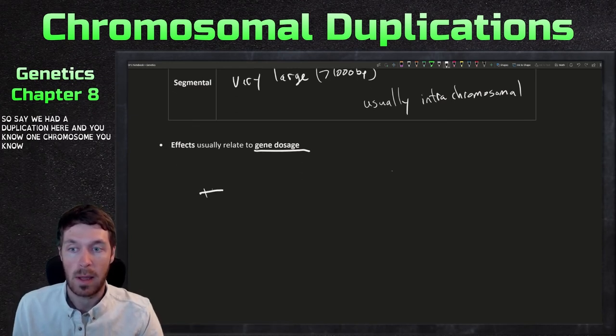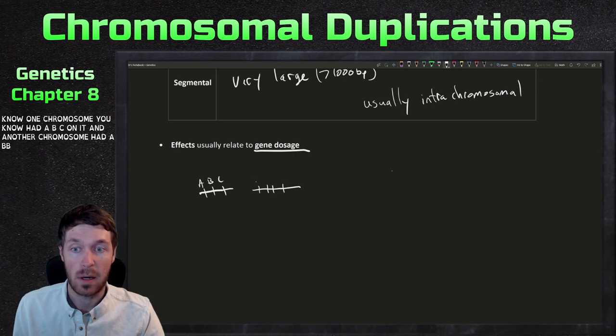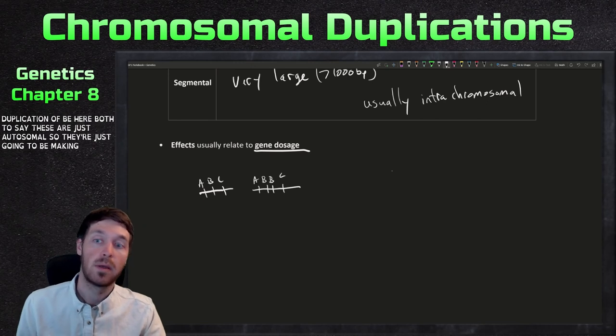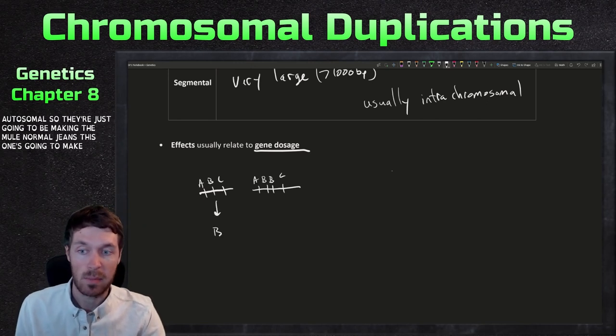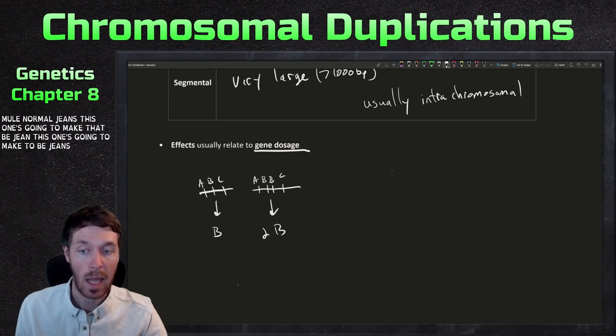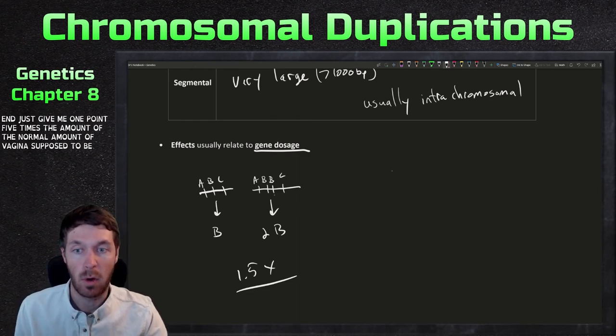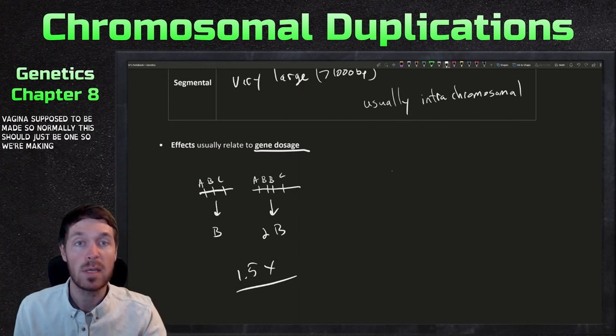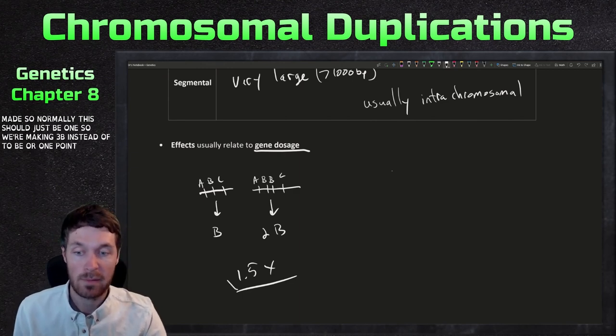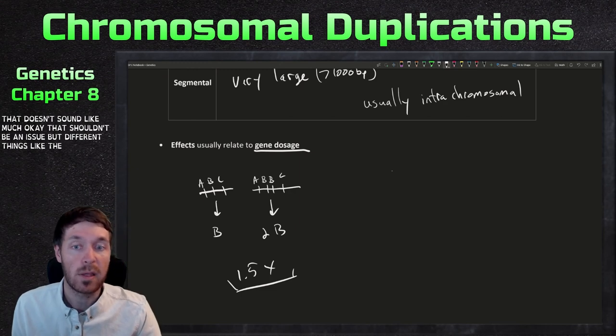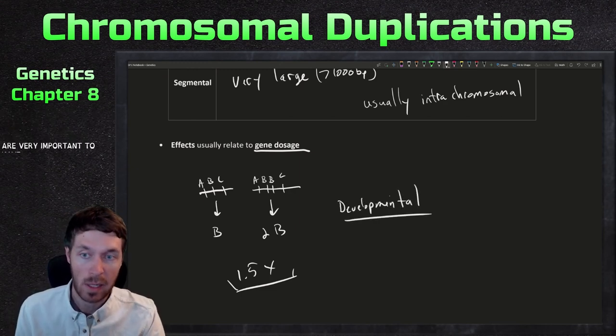So say we had a duplication here and one chromosome had ABC on it where we had a tandem duplication of B here. Both, let's say these are just autosomal. So they're just going to be making the normal genes. This one's going to make that B gene and this one's going to make two B genes. So in the end, this is going to be 1.5 times the amount of the normal amount of B gene that's supposed to be made. So normally this should just be one. So we're making 3B instead of 2B or 1.5 times increase. Now that doesn't sound like much. That shouldn't be an issue, but different things like developmental cues are very important to have the correct gene dosage at the correct amount of time.